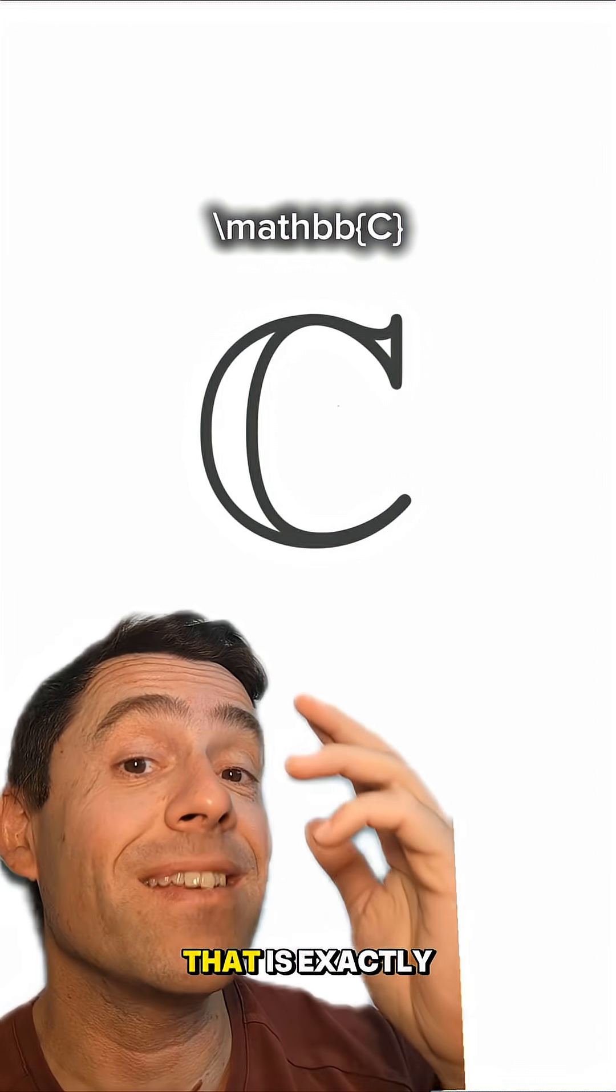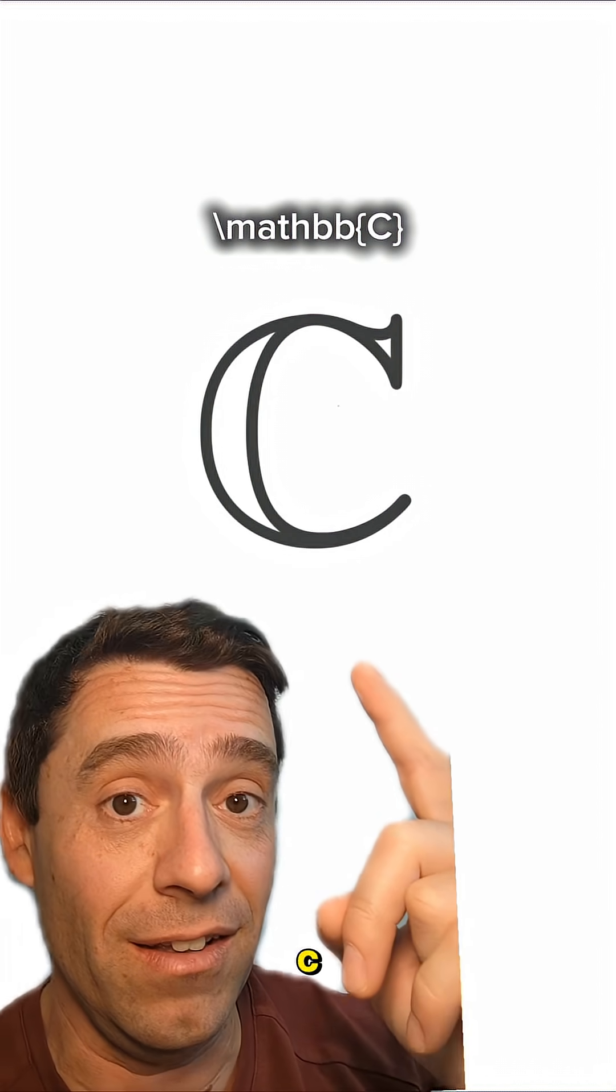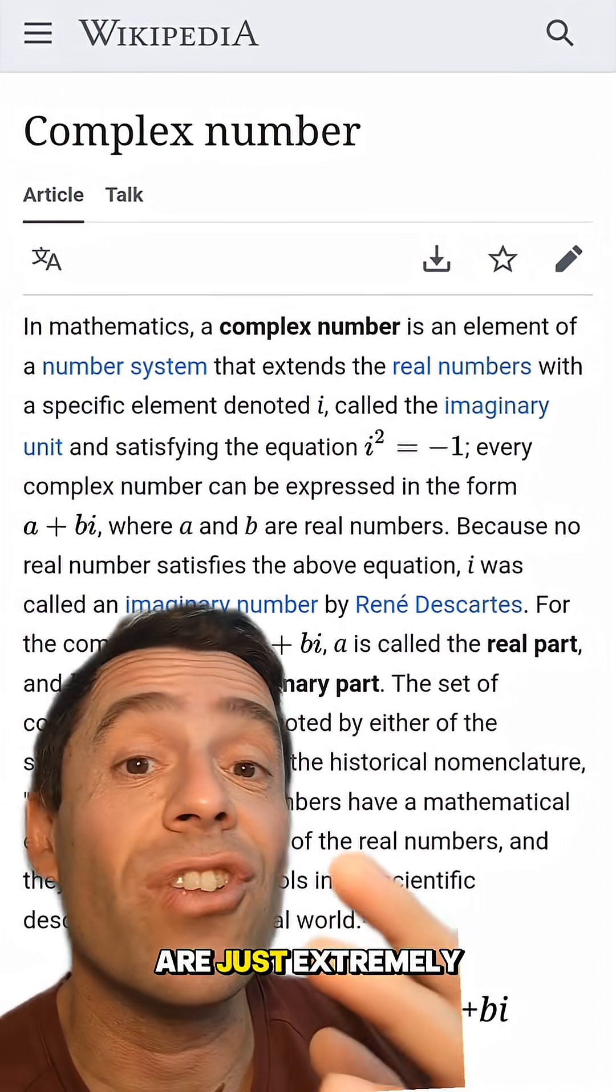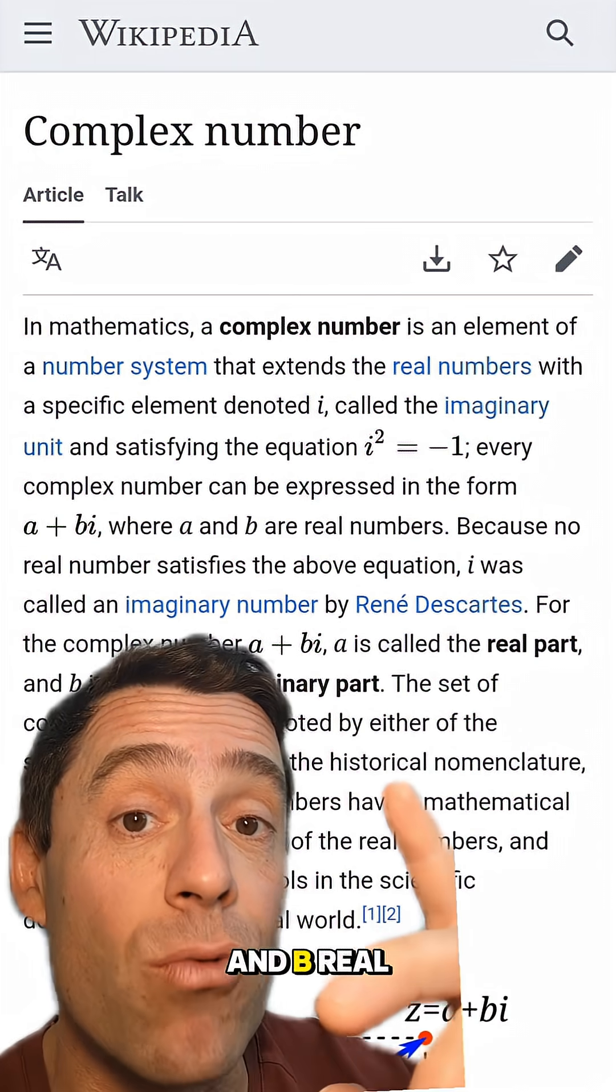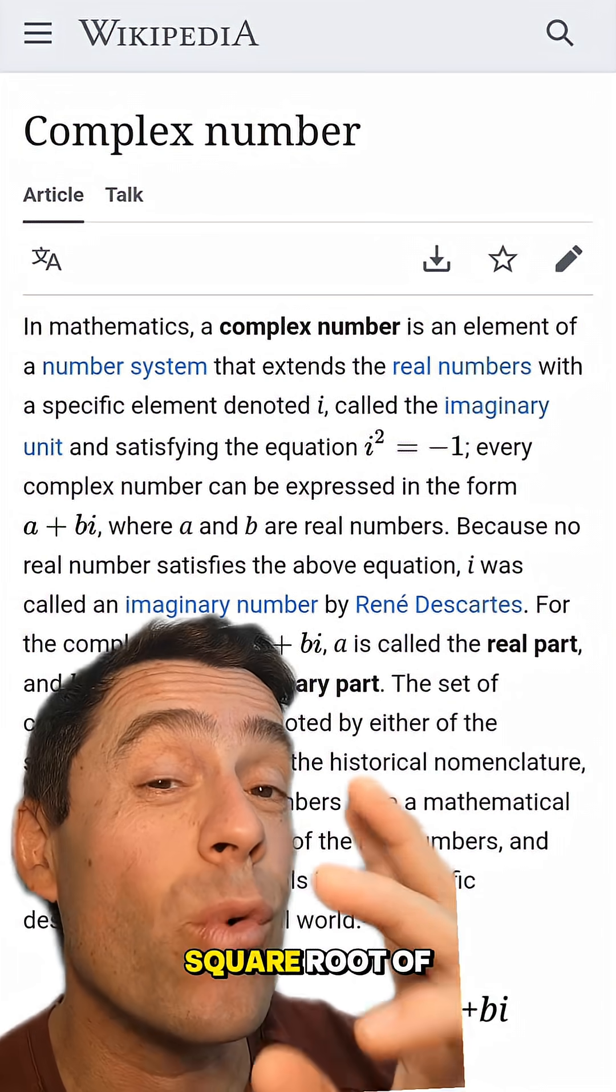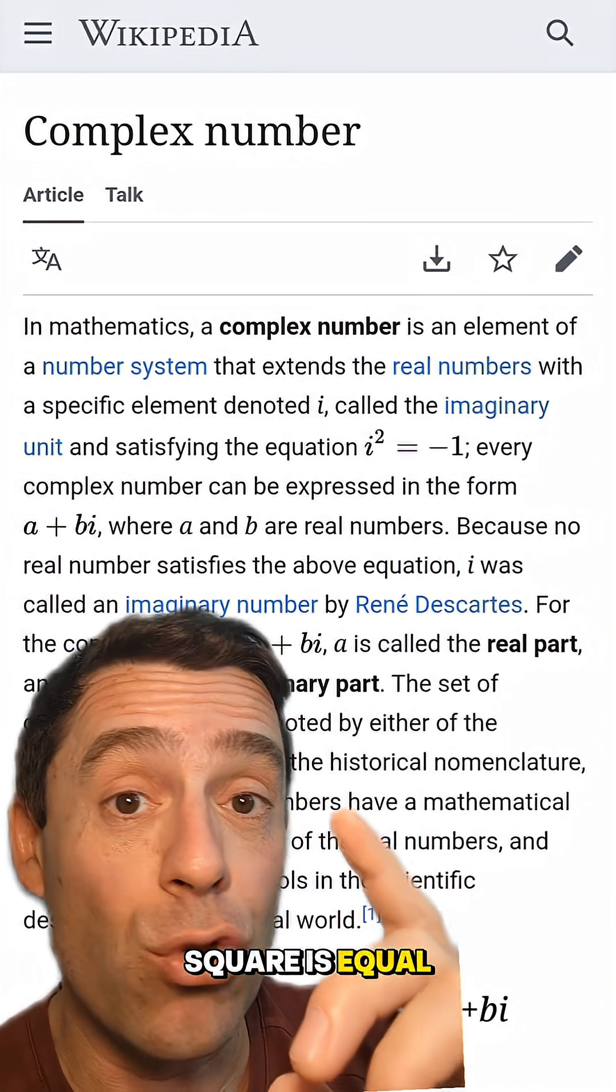And guess what? That is exactly the symbol we use for the complex numbers, blackboard bold capital C. Now complex numbers are extremely important in all of mathematics. They are the numbers of the form a plus bi, with a and b real numbers and i a square root of minus one. So i is a number whose square is equal to minus one.